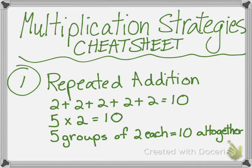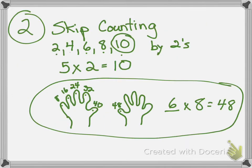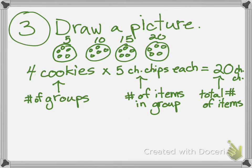Yesterday we talked about three strategies. We outlined them. The first one was repeated addition — boys and girls, you're not writing anything yet, you're just looking at what you already wrote. The second one was skip counting. And the third one was draw a picture. And these are all to show what's happening when we multiply.